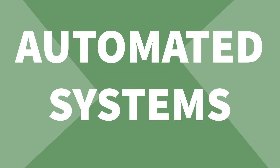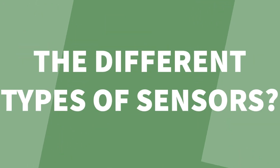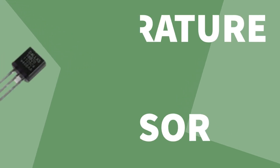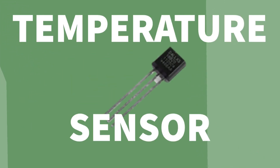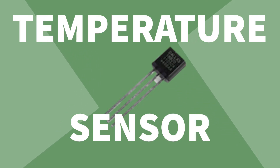So we know automated systems use sensors, but what are the different kinds of sensors? Try to memorize these. The first one we'll look at is a temperature sensor. These obviously measure the temperature by sending signals, and the signals change as the temperature changes.